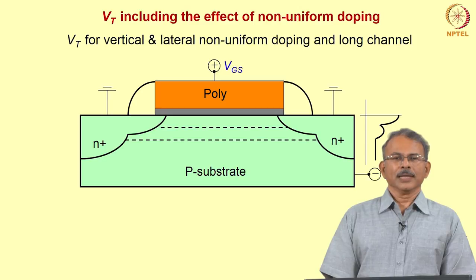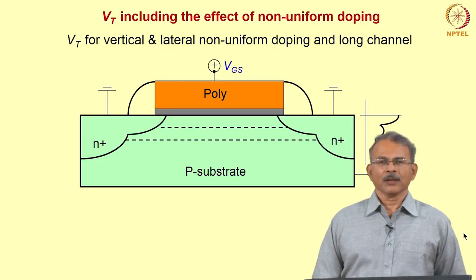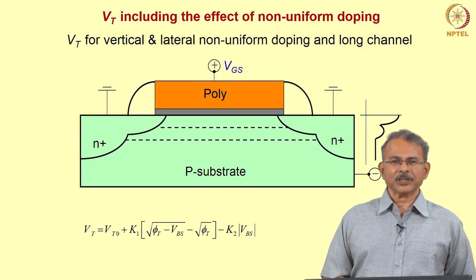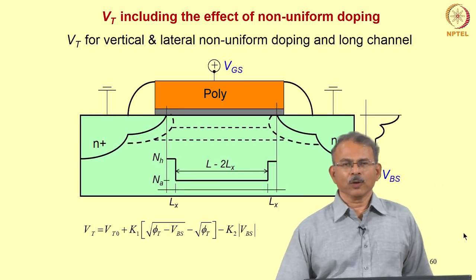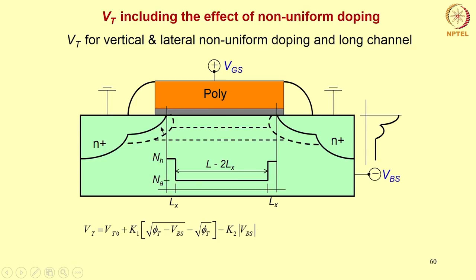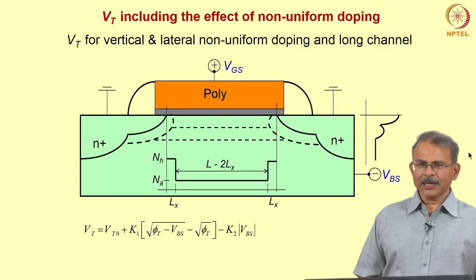Now let us move to Vt for vertical and lateral non-uniform doping with long channel, adding lateral non-uniform doping via halo implants. Using a box-type approximation, the halo implants are treated as uniformly doped with higher doping NH than NA within certain regions. Evidently, for an N-channel MOSFET, increasing substrate doping increases the threshold voltage. Let me give the result first and then show how it is obtained.